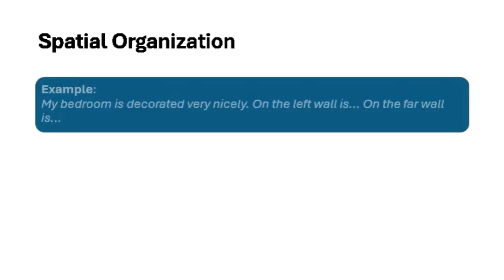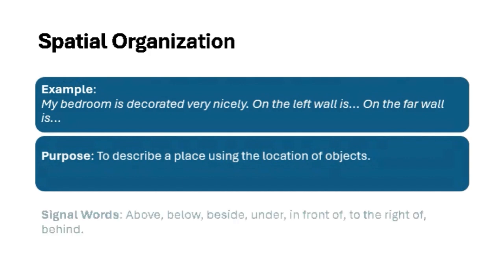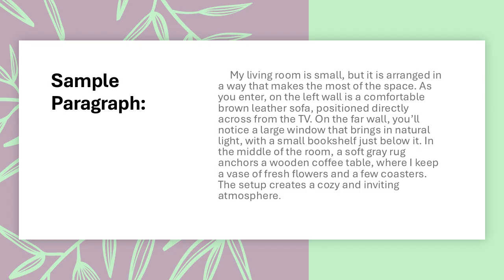Spatial organization is all about describing where things are in relation to each other. It's most often used in descriptive writing. Imagine you're describing a room — you guide the reader through the space by pointing out where each object is located. For example, to the left is the sofa, across from the TV, and under the window is the bookshelf. It gives the reader a mental map of the setting. This paragraph demonstrates spatial organization, where the description of the living room is organized based on the physical layout of objects in relation to one another, guiding the reader through the space step-by-step and creating a vivid mental picture.